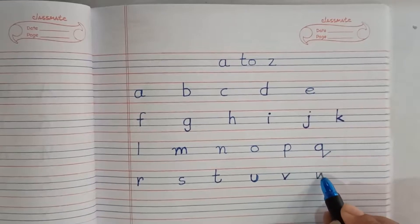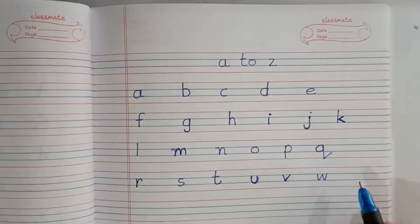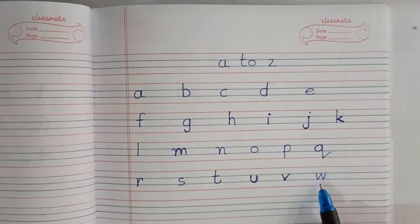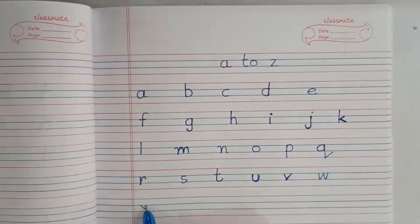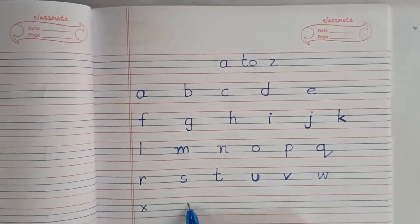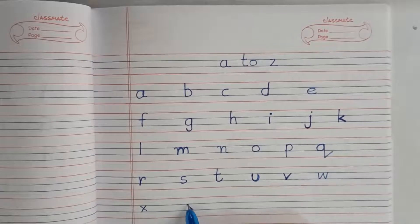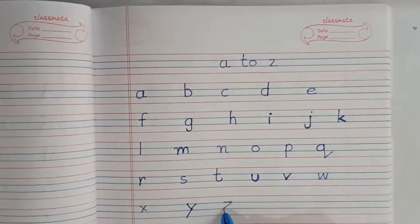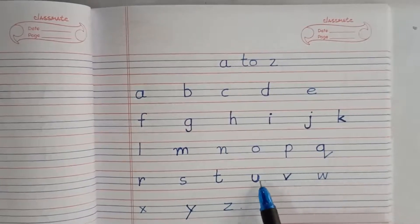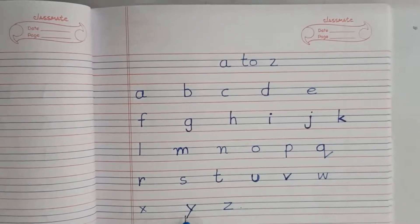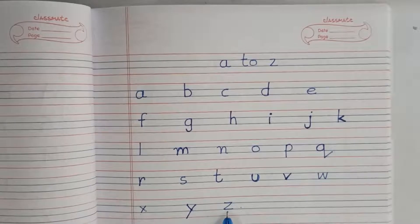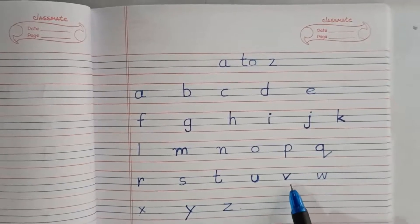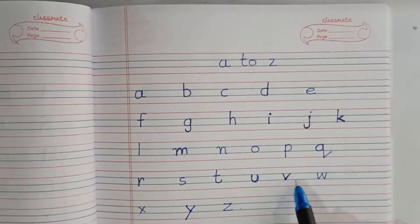Then W, same like capital W, but you have to write in blue line. Then X. Then Y, you have to start it from blue line upper side, then write Y. And Z. U, V, W, X, Y, Z are same like capital letter, but remember you have to write in the blue line.